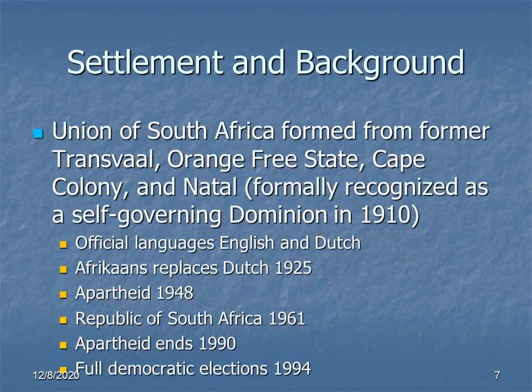Following the conclusion of the war, it didn't take too long for the Union of South Africa to form from the four former colonies: two Boer colonies of the Transvaal and the Orange Free State, and two British colonies of the Cape Colony and the Natal. South Africa was recognized as a self-governing dominion in 1910, with the official languages of English and Dutch, with Dutch later being replaced by Afrikaans. The racial segregation was redefined as apartheid in 1948, and in 1961 South Africa became a republic. Apartheid finally came to an end in 1990, and in 1994 South Africa had its first democratic elections with full adult enfranchisement. I mention this because it has a lot to do with the development of the English language in South Africa.